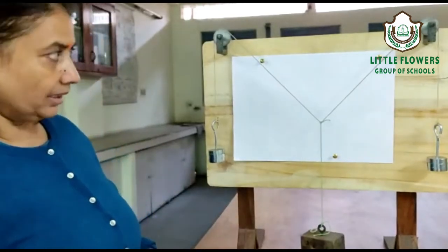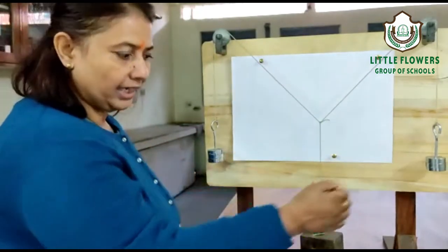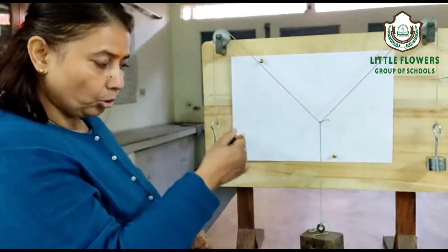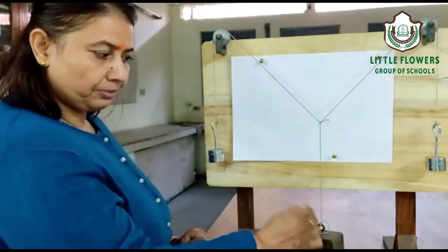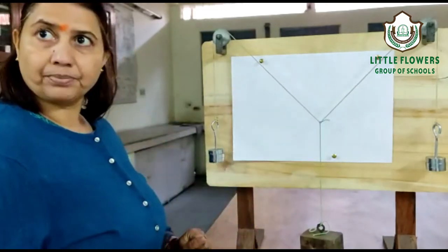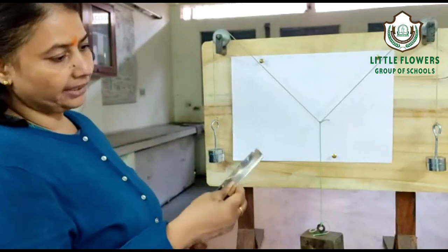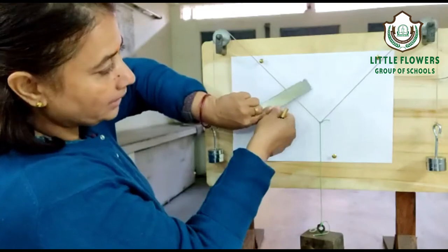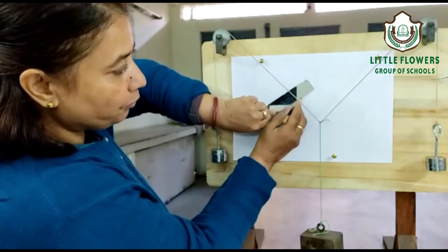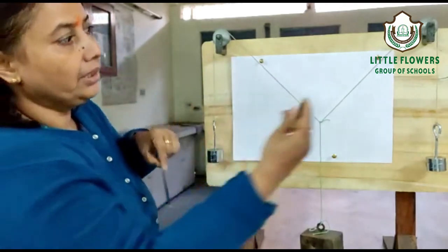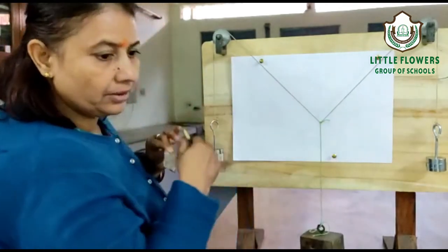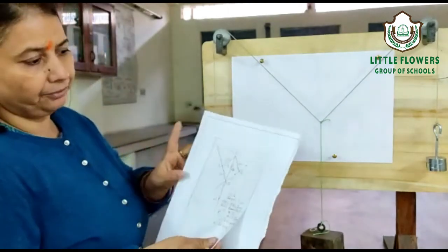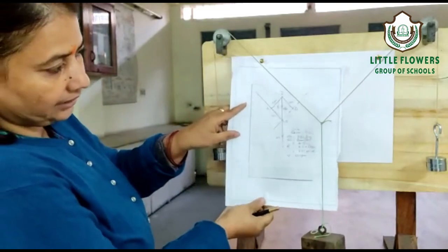Now, let us start the practical. As I have told you earlier, we are having the known weight as well as the unknown weight. With the help of the thread, let us hang the known weight and the unknown weight in the form of a Y. After hanging them, let us place the strip over here and mark the point where the threads coincide. After marking all the points, let us join them with straight lines.